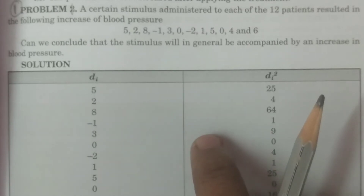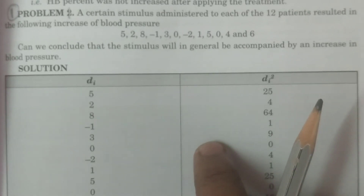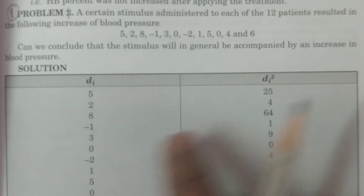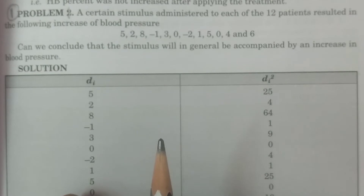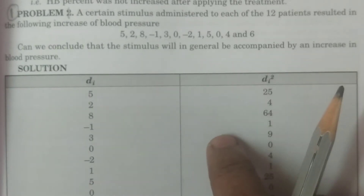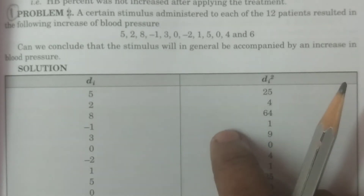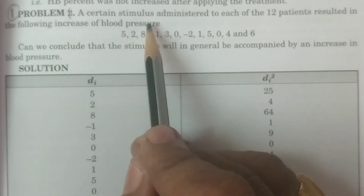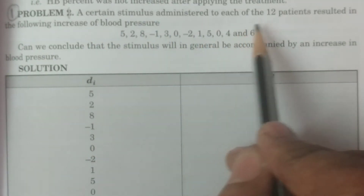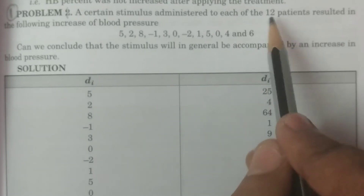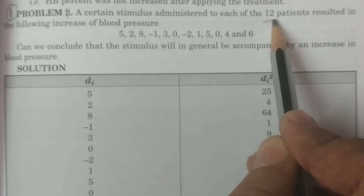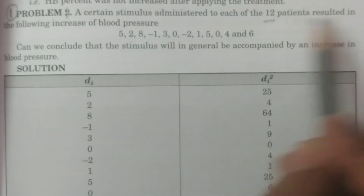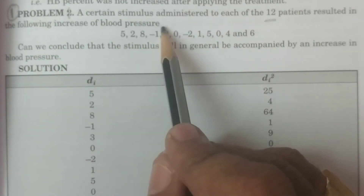This is a dependent case. The sample sizes are not equal. A certain stimulus was administered to each of the 12 patients, so N is equal to 12. The patients resulted in the following increase of the blood pressure.